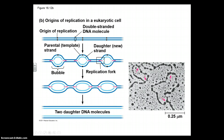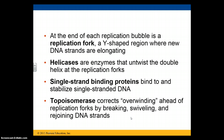In a eukaryotic cell, it's slightly different because our chromosomes are linear. The bubble will form just as it did in the circular chromosome. This right here would be a replication fork. The arrows represent the fact that replication of DNA is proceeding in two directions — both to the left and to the right. The end result is two daughter molecules. At the end of each replication bubble, you see the replication fork, which is a Y-shaped region where the new strands are elongating.